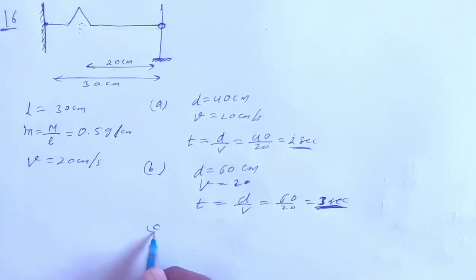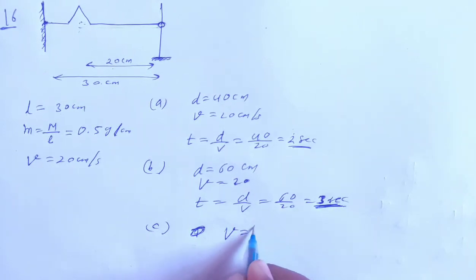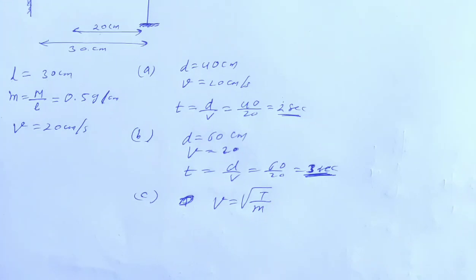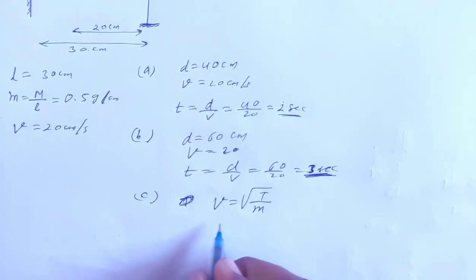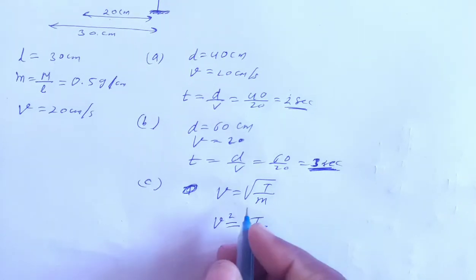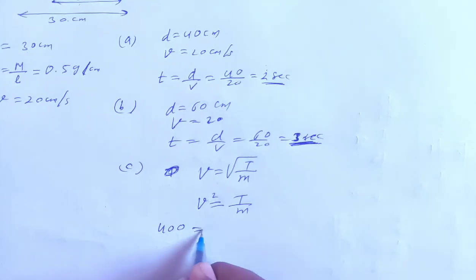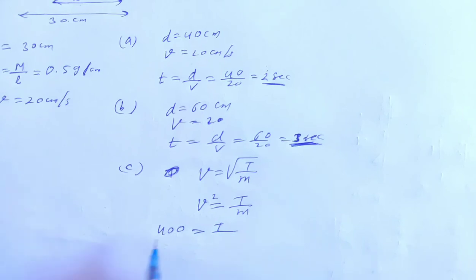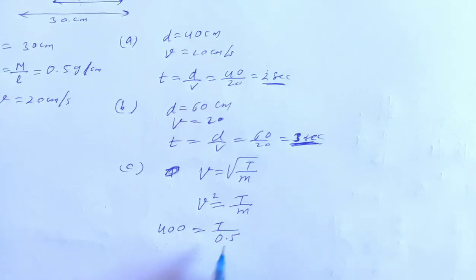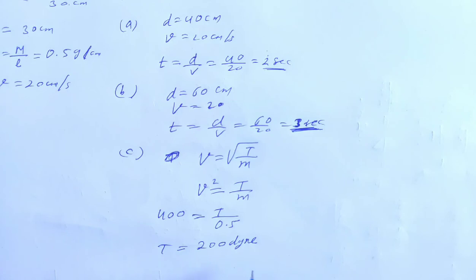Part C: find the tension in the string. Using the formula: speed = √(Tension / mass per unit length), so Tension = speed² × (mass per unit length). Speed² = 400, mass per unit length = 0.5 g/cm, so Tension = 400 × 0.5 = 200 dynes. Tension is 200 dynes (can also be expressed in Newtons).